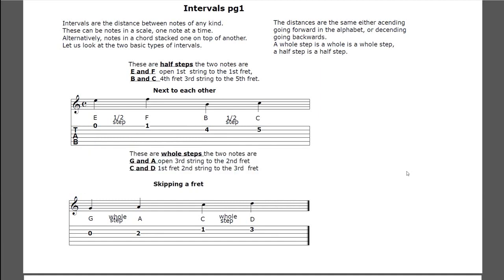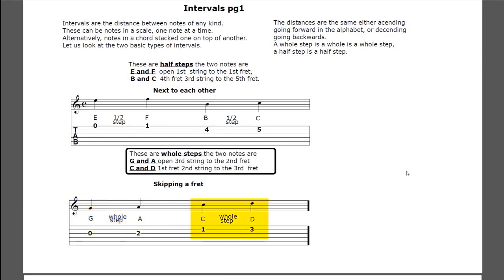Look below that - these are whole steps. The two notes are G and A, open third string G to the second fret A, and C to D, first fret second string C to the third fret second string D - that's just a whole step. If you went backwards, A down to G or D down to C, you still want a whole step, so the basic distances are going to be the same.